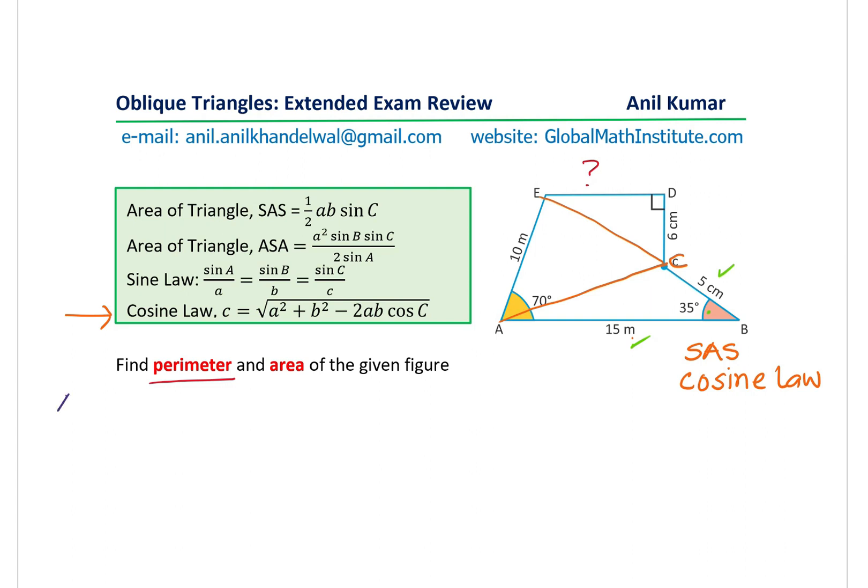Let's begin with the solution. We'll begin with the triangle ABC. First step is connect A to C, and then we'll use cosine law. And find what AC is. So AC is square root of these two squares, 15 square plus 5 square minus 2 times 15, 5 and cosine of the angle included, which is 35 degrees.